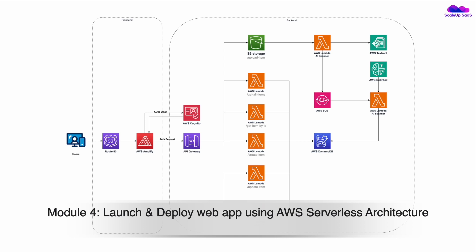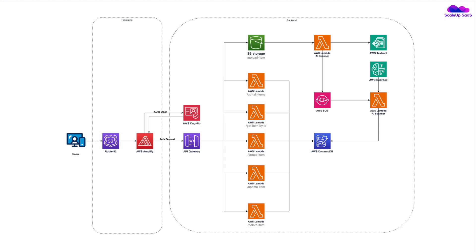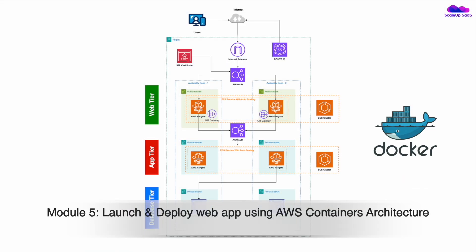In Module 4 we'll learn how to launch and deploy a web app using AWS Serverless Architecture. We'll take the Shopee application and deploy it in a serverless setup — the front-end will use AWS Amplify, Route 53, Cognito, and API Gateway, while the back-end will use AWS Lambda and DynamoDB. We'll also cover bonus services including AWS AI services like AWS Bedrock and the AWS tech stack.